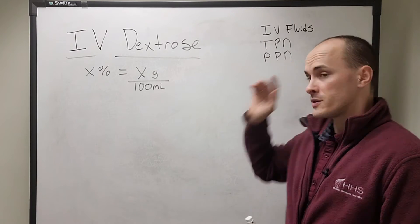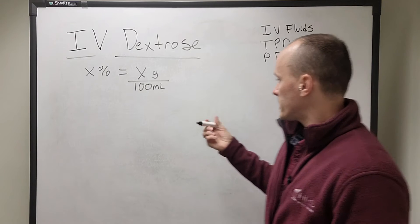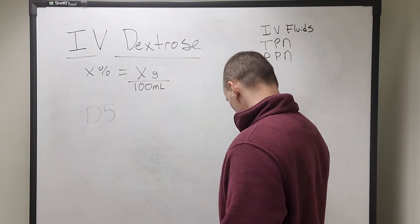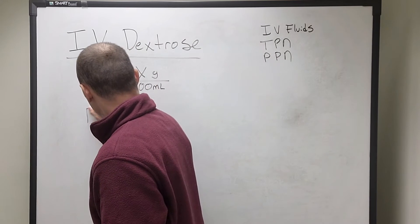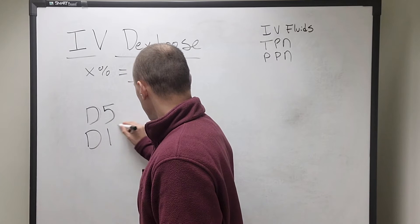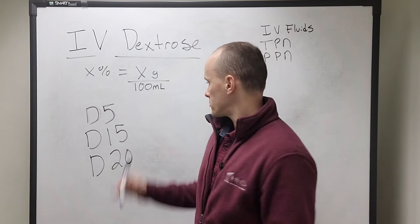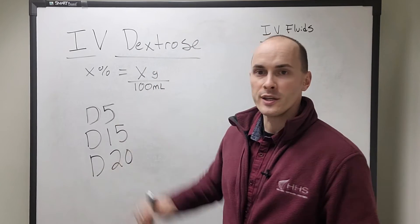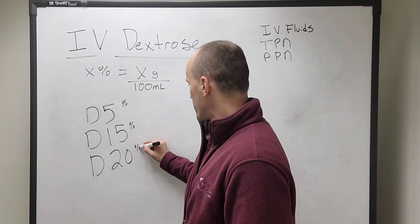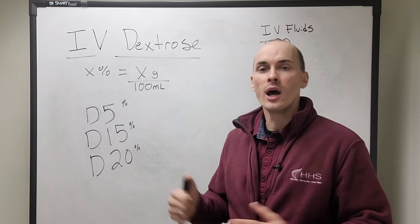So when we look at IV dextrose solutions, they're usually going to be listed as a percentage. It could be listed as D5, could be listed as D15, could be listed as D20. That D stands for dextrose, and this number that you see after the D represents a percentage—the percent in the solution that contains dextrose, so the dextrose saturation of the solution.